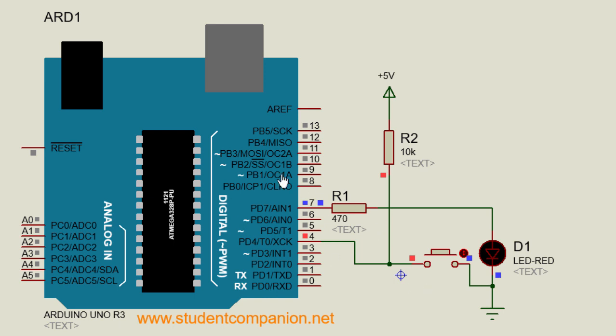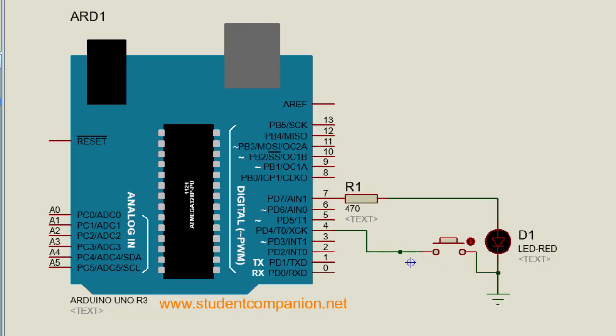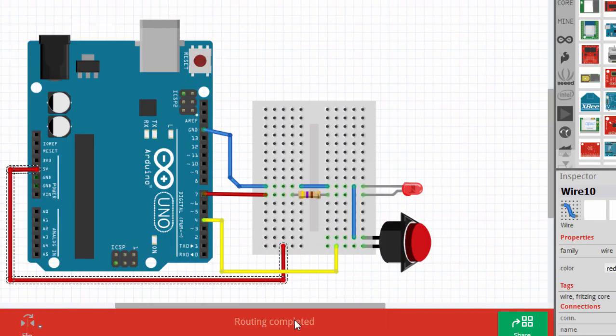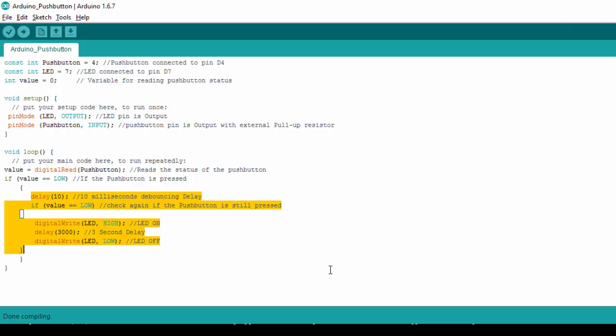So if you want to use the internal pull-up of the Arduino, it's very easy. All you need to do, you don't need to use an external resistor. So we're going to delete this. On our breadboard, we're going to also remove this resistor. Delete the wire as well.